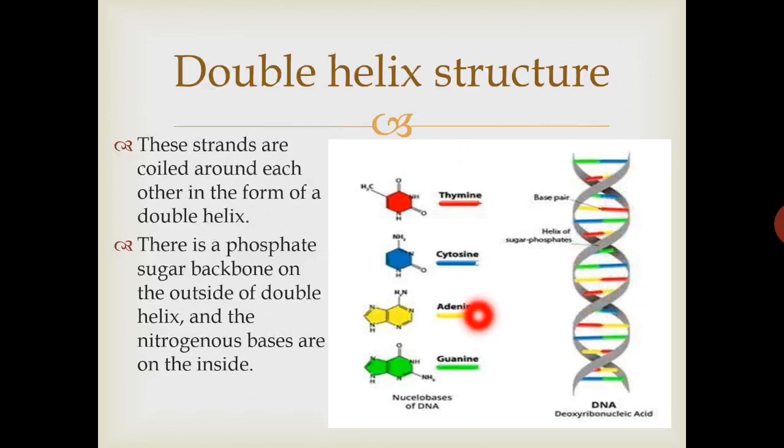There are four nitrogenous bases. This concept was from Watson and Crick. There are four nitrogenous bases: thymine, cytosine, adenine and guanine. Thymine and cytosine are single ring structure. Adenine and guanine are double ring structure. You can also see chemical composition.